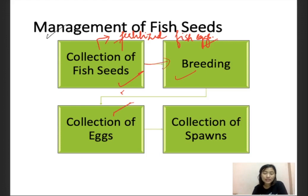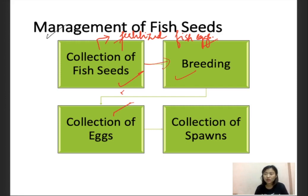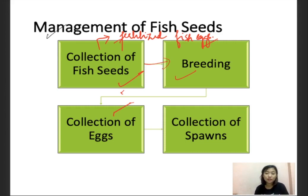After collecting fish seeds from these resources, we rear them and then breed the species. Breeding involves artificial fertilization of two organisms and can be natural as well as artificial. Once we breed them and fertilize the eggs, we collect the fertilized eggs and then collect the spawns. We can preserve the spawns for further use. These are the steps involved in the management of fish seeds.